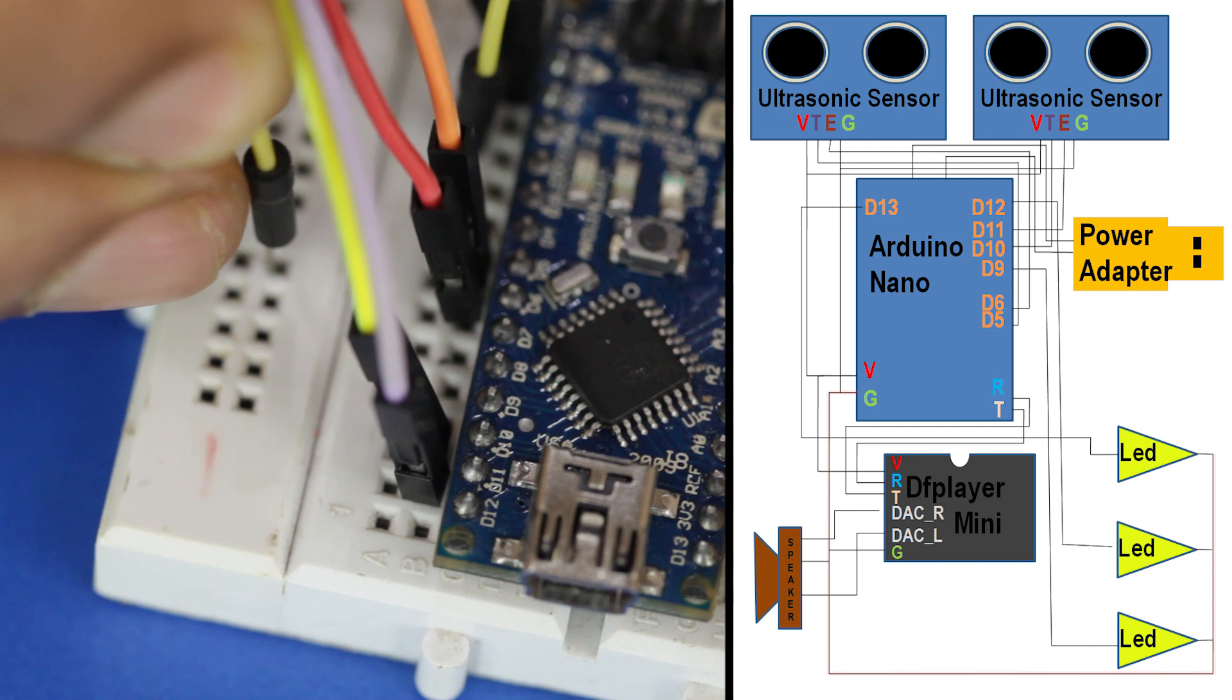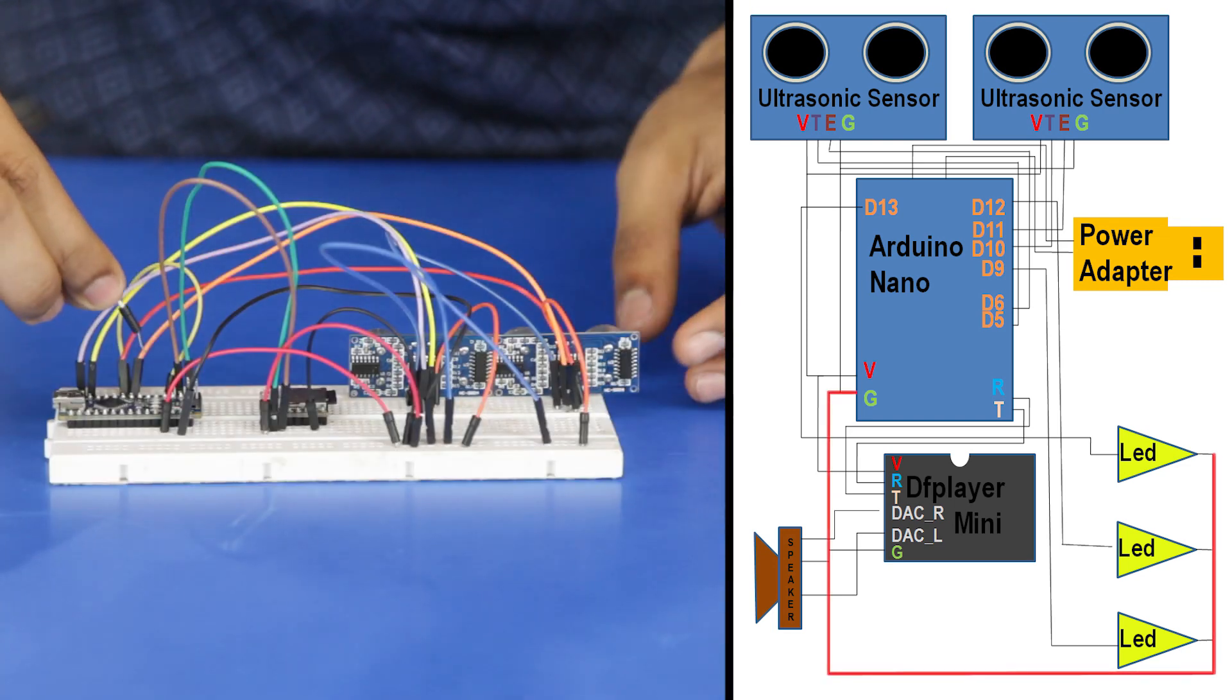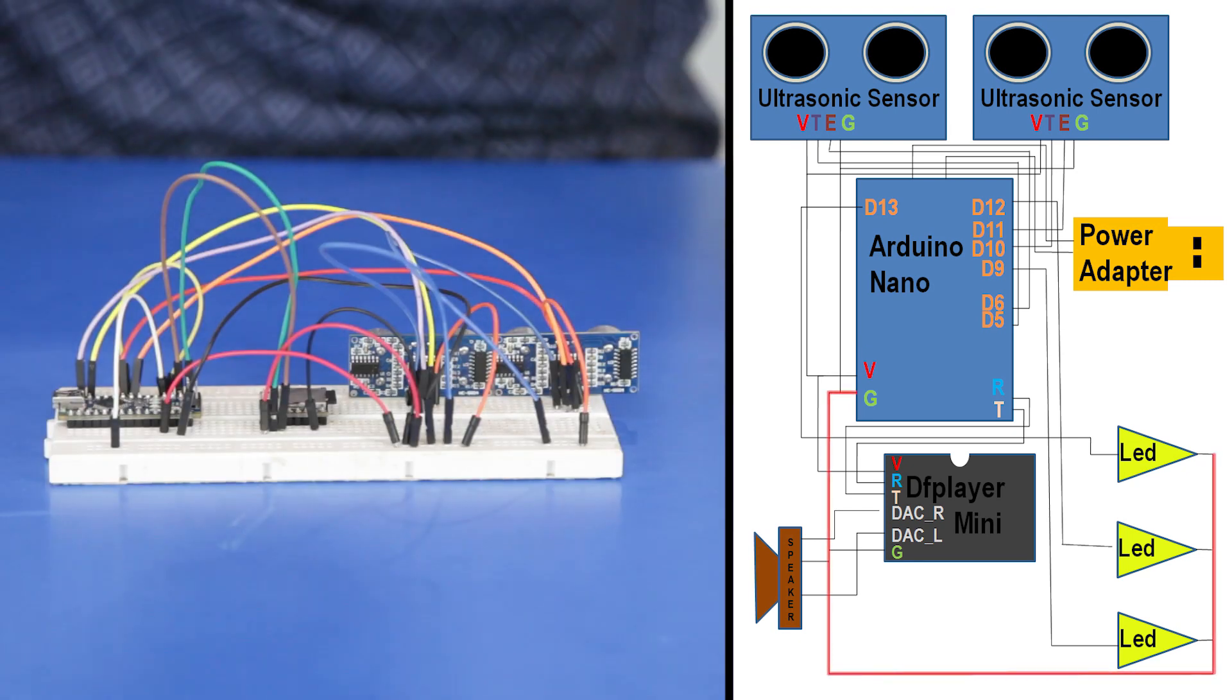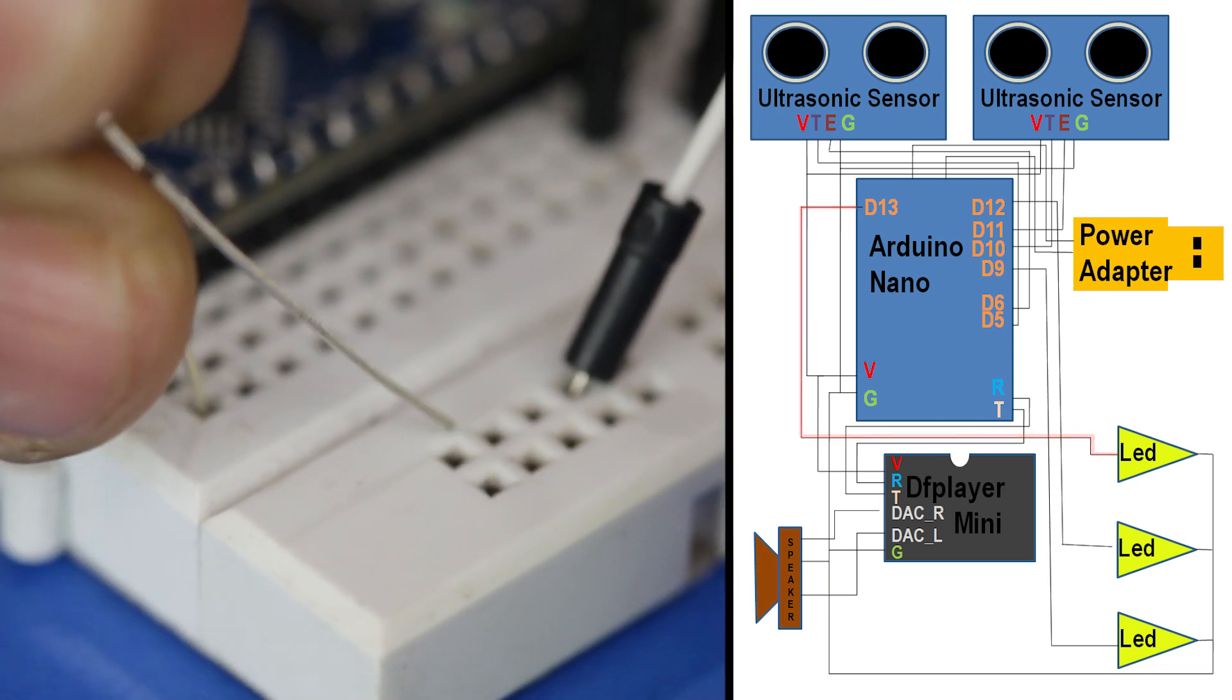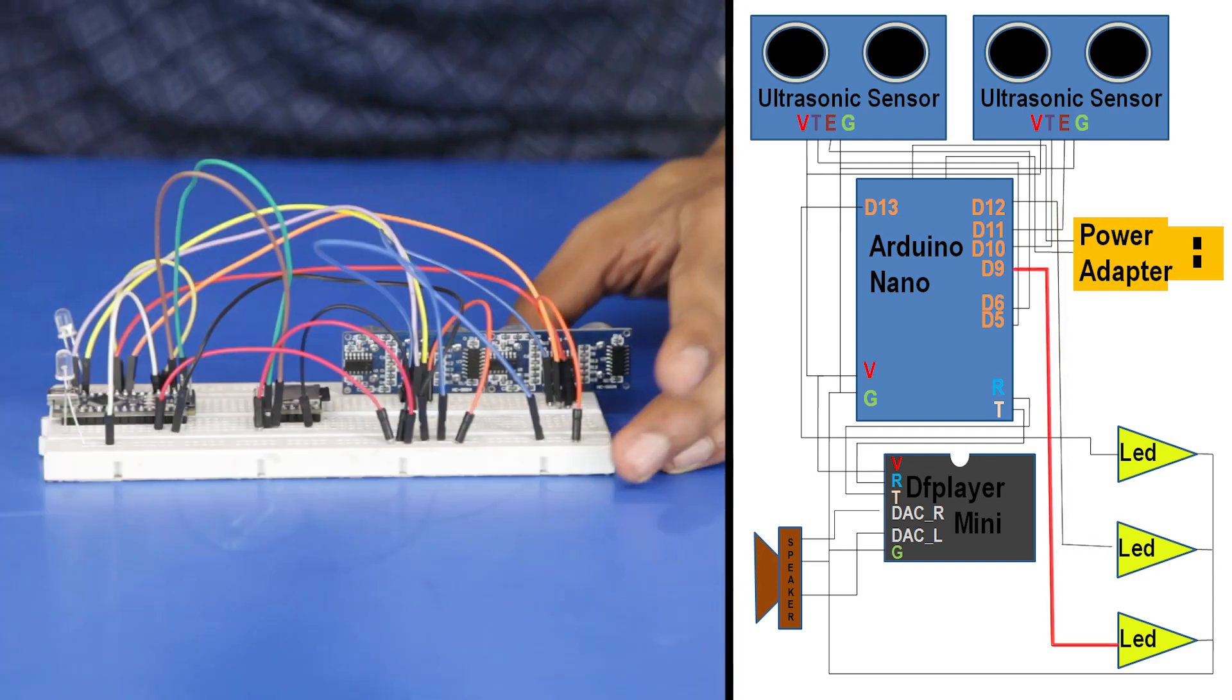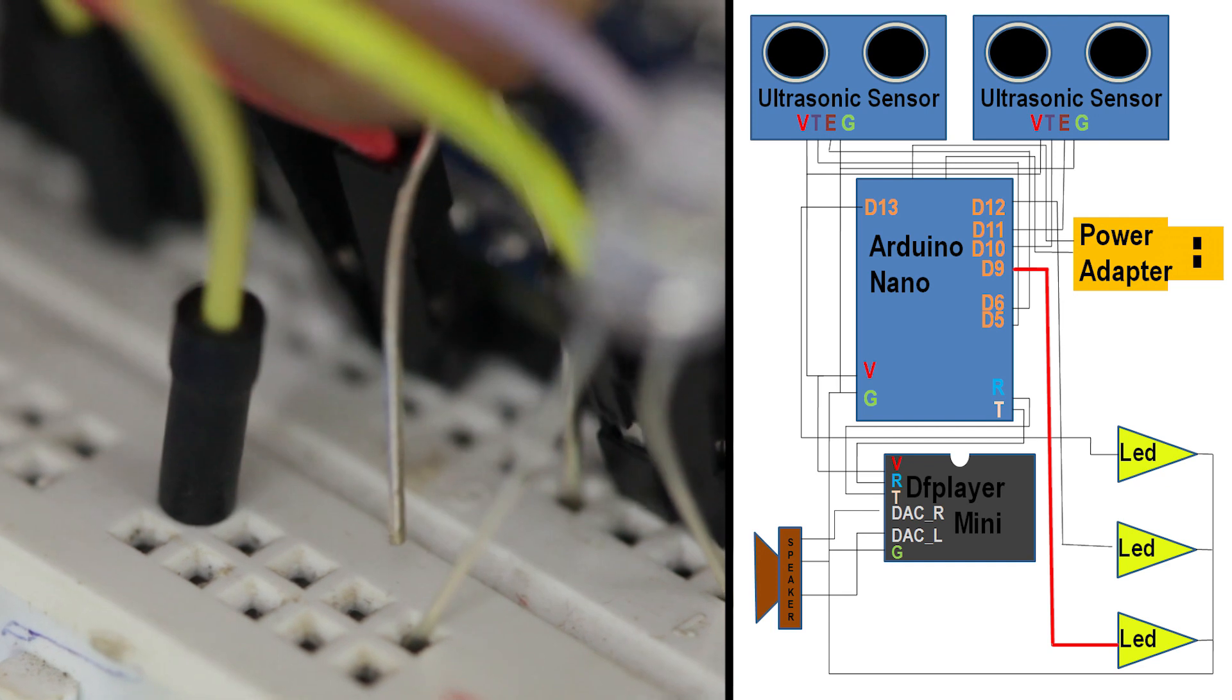Connect two wires for the ground connection of the LEDs. The first LED is connected to pin 13, the second LED to pin 12, and the third LED to pin 9 of the Arduino.